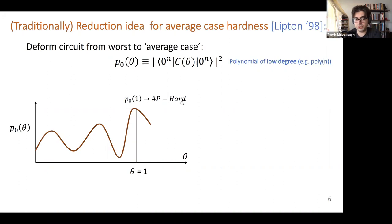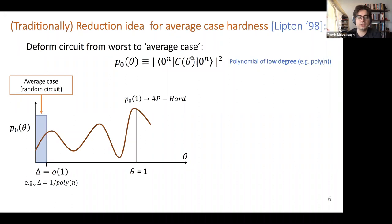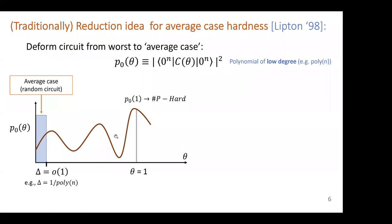By construction, at theta equals one it's the solution to a #P-hard problem, and at theta equals zero—or very near zero—it corresponds to circuits whose local gates are from the Haar measure, i.e., the average-case or random circuit. This delta (capital delta) is little-o of one, meaning it's vanishing. So these are all points where thetas are very close to zero, if not zero.